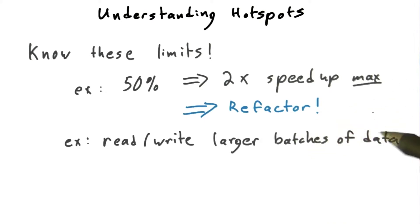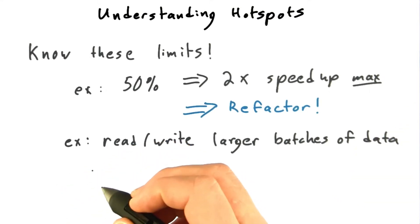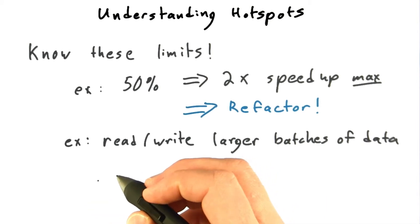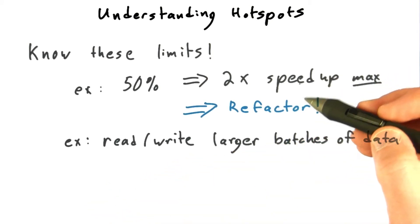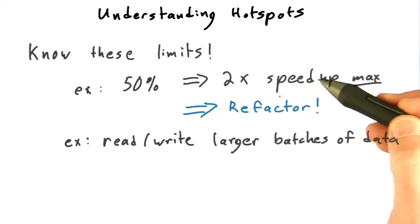For example, maybe you can read and write larger batches of data at once, so that the GPU has more work to do on a single batch. This situation comes up pretty often in practice. GPUs are so fast that often porting the hotspot to CUDA makes that hotspot so much faster that it's no longer the bottleneck.